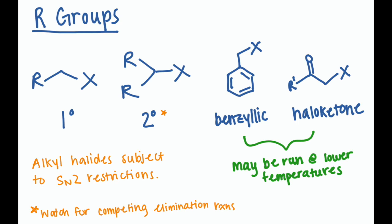Our R group can also be a benzylic or something with a ketone on it. And because these R groups improve the electrophilicity of the halide, we can run these reactions at lower temperatures when we use these R groups.